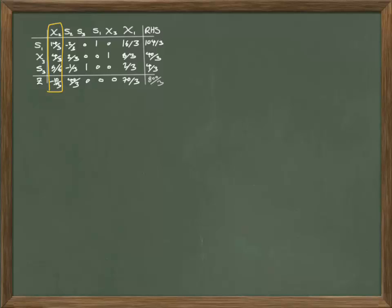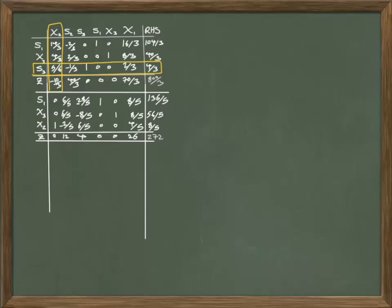I find the most negative value here and implement the minimum test. Go to the next table and do the elementary row operation to make x2 a basic variable instead of s3.